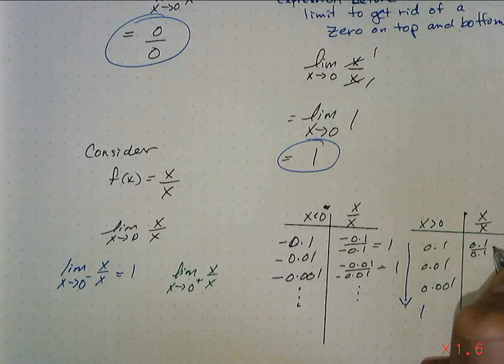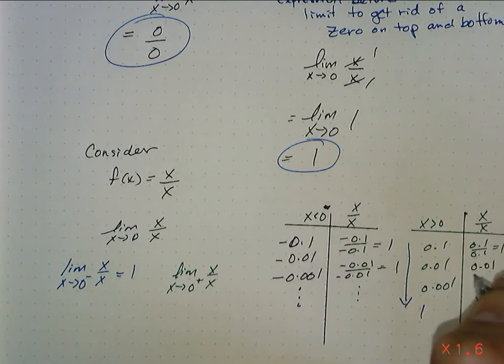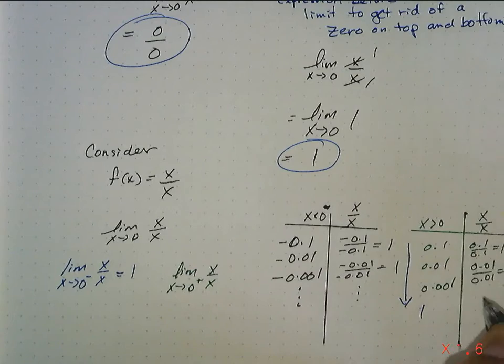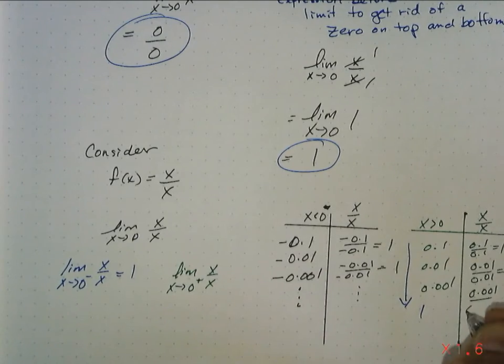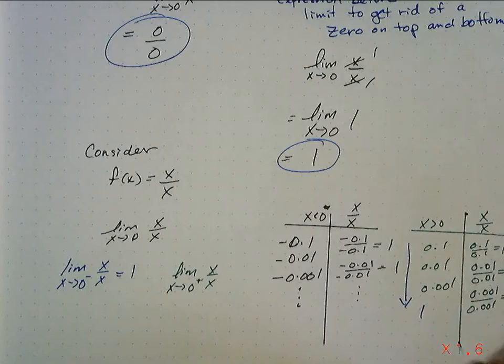So it's 0.1 over 0.1, which is 1. 0.01 over 0.01, which is 1. 0.001 over 0.001, which is 1. And as you can see, this too is approaching 1 as I get closer and closer to 0.